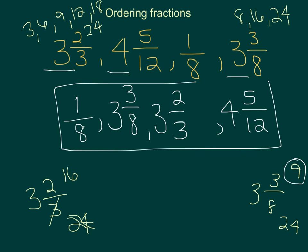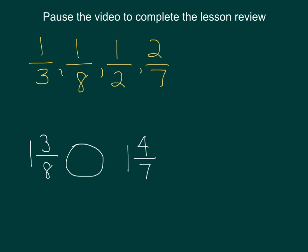So this would be how you would order the numbers from least to greatest. Pause the video to complete the lesson review. Make sure you show me this lesson review for verification of watching this video. You're going to want to order the first set of fractions from least to greatest, and then you're going to compare the fractions below. A hint for the top is to break them into pairs and begin to order them in that format.